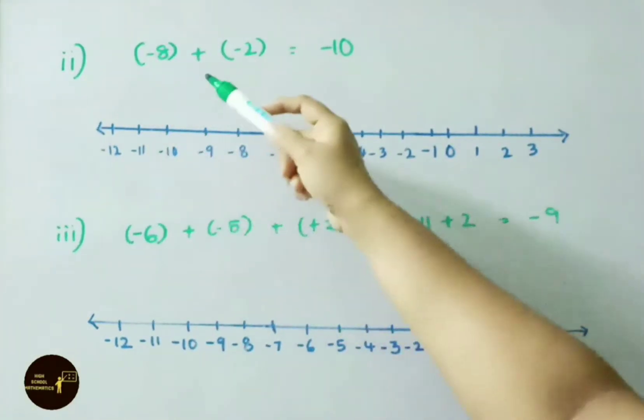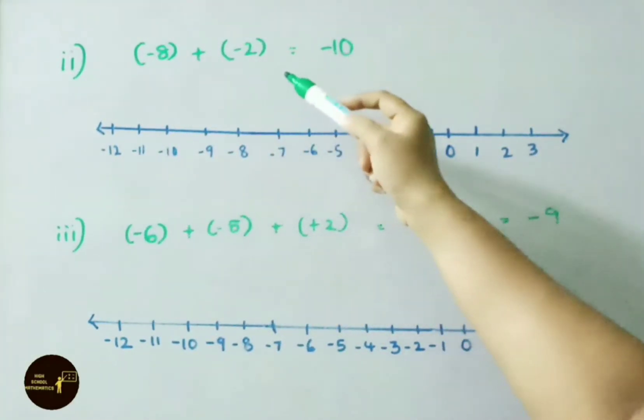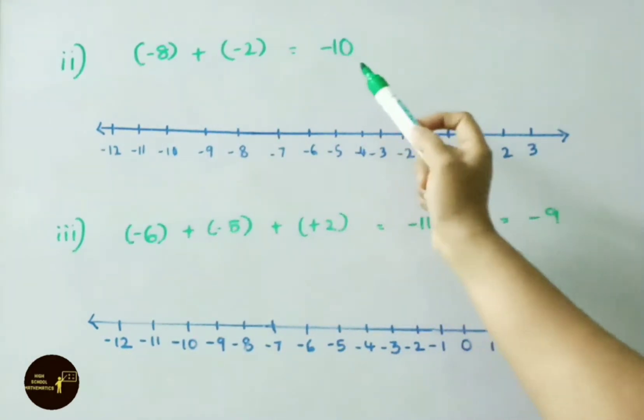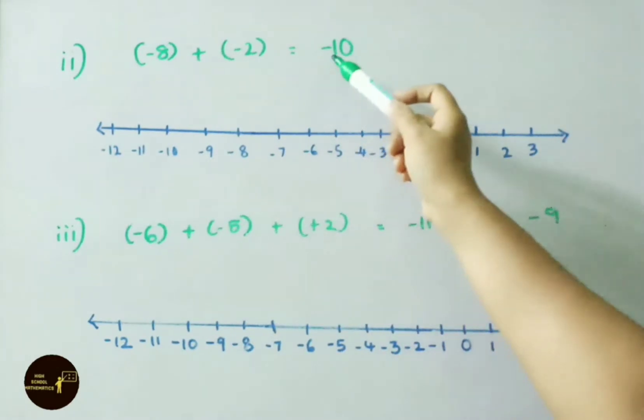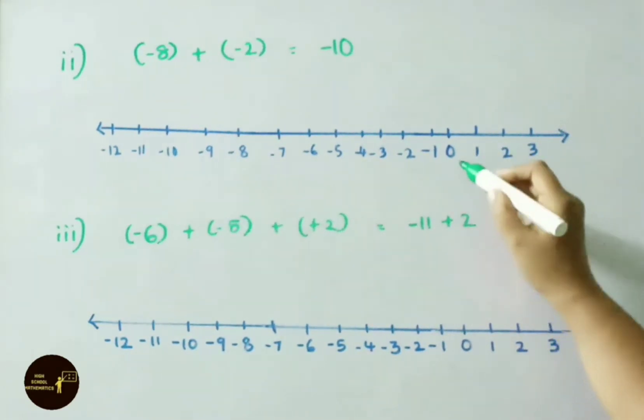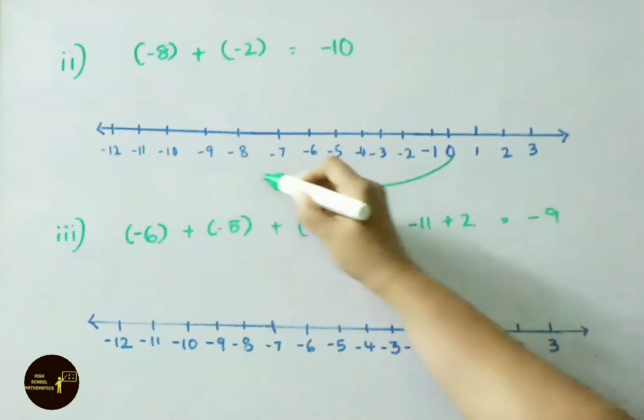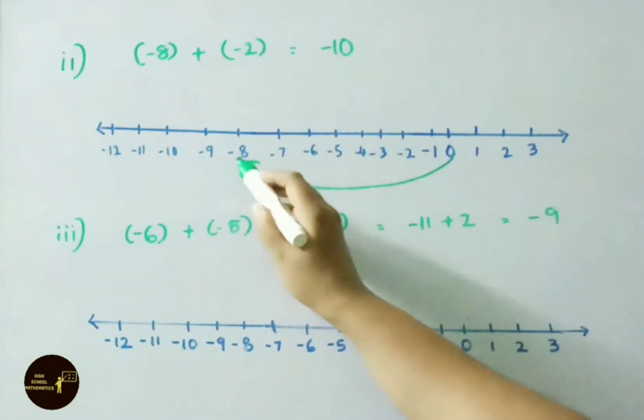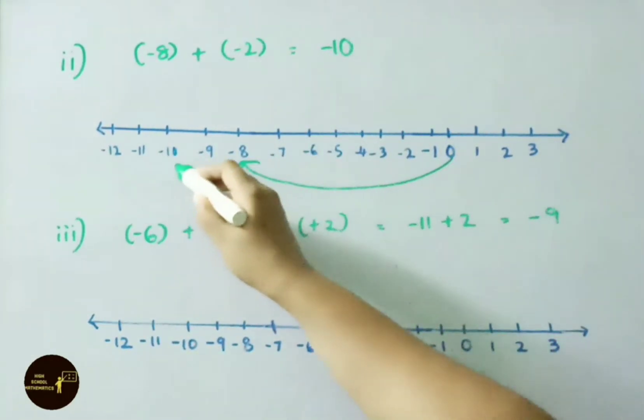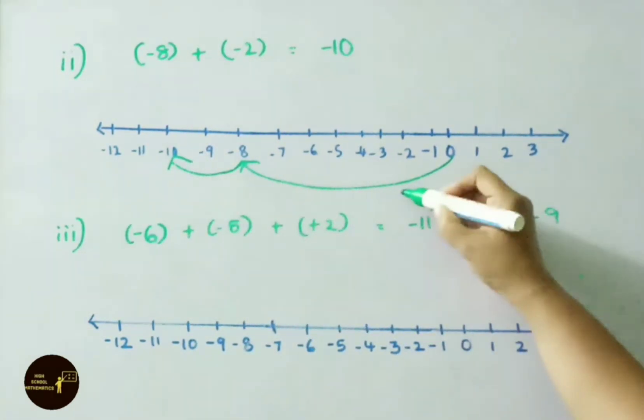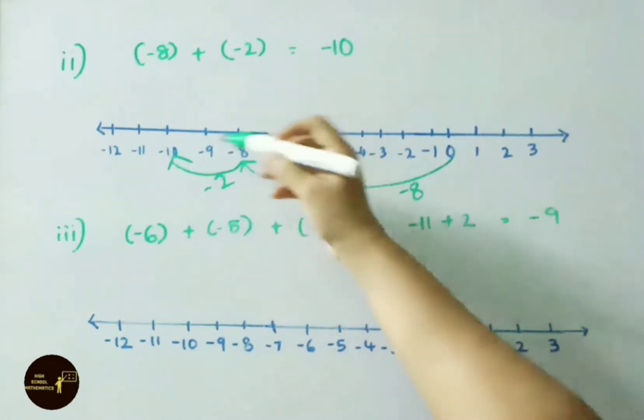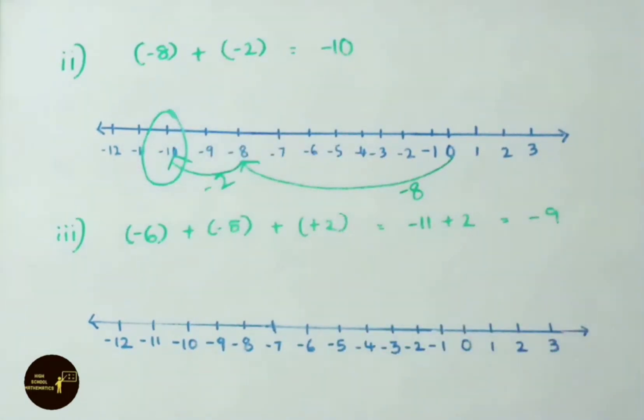See the second sum now. Minus 8 plus minus 2. Same sign we have to do addition. So 8 plus 2, 10. Both are negative integers so keep minus. So the answer is minus 10. Now let us add this on the number line. First we have to show minus 8, zero onwards minus 8. Then after add 2 numbers. So 8 onwards 2 if you add, that is minus 10. So write down minus 8 plus minus 2, we get answer minus 10.